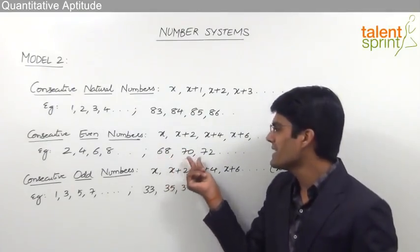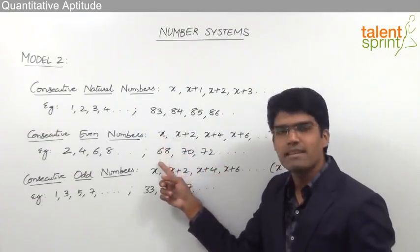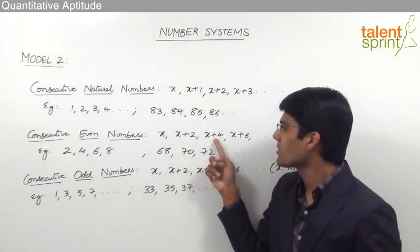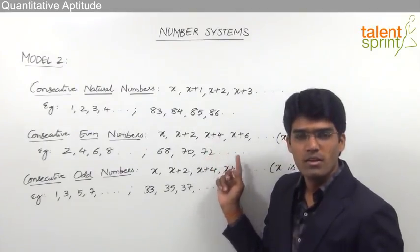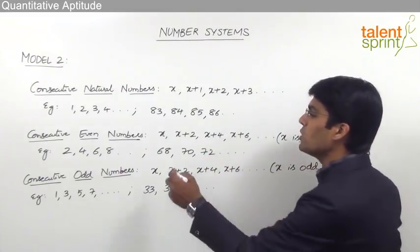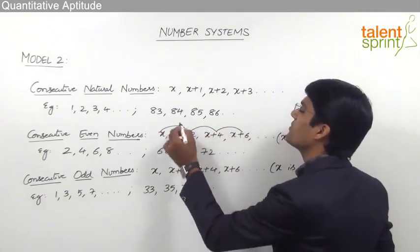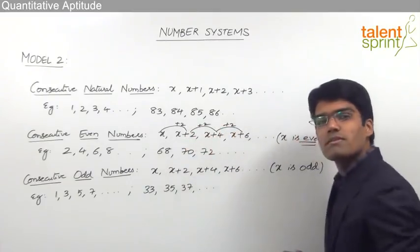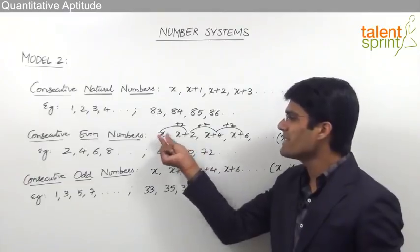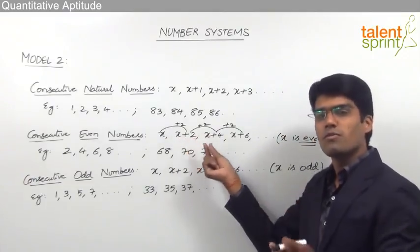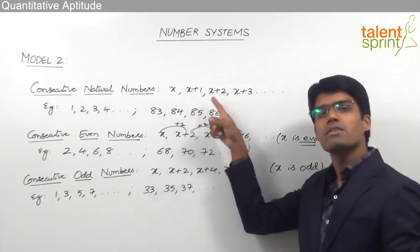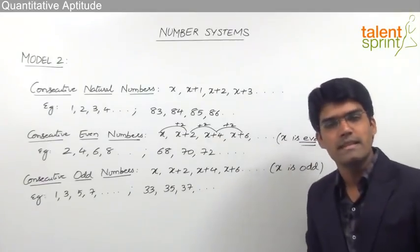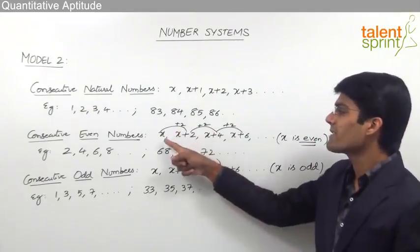For example, 68, 70, 72 are consecutive even numbers. If x is 68, then x+2 is 70 and x+4 is 72. The key point is that the difference between two consecutive even numbers is always 2. So x, x+2, x+4, x+6 forms consecutive even numbers, provided the first number x is even.